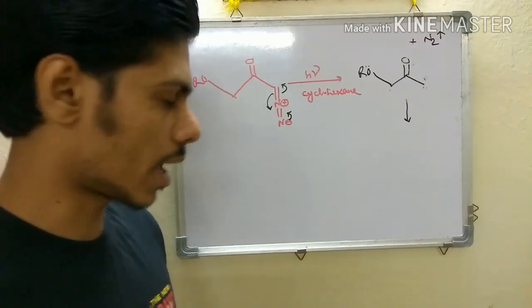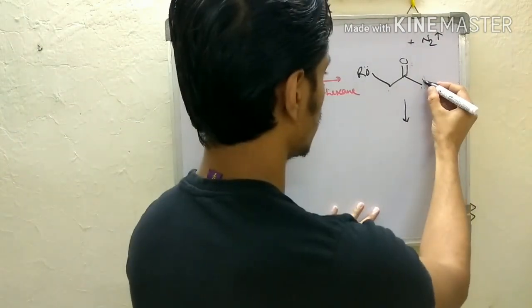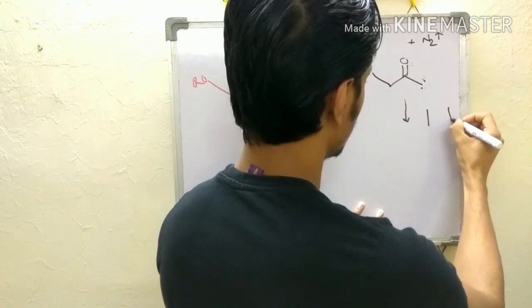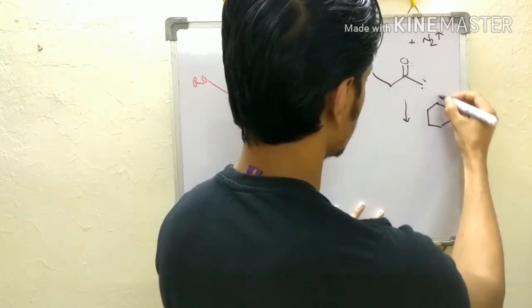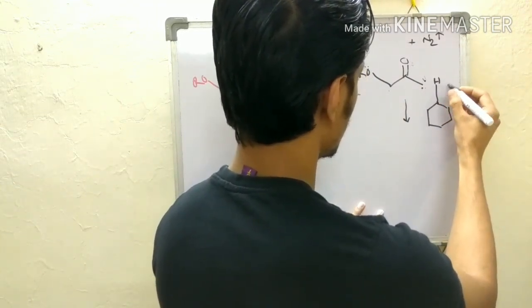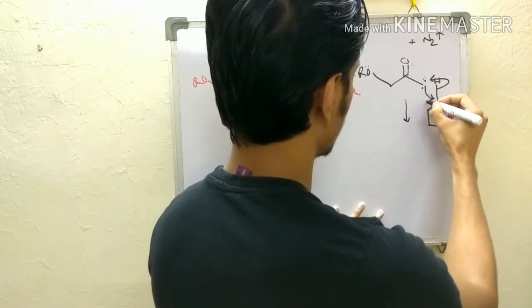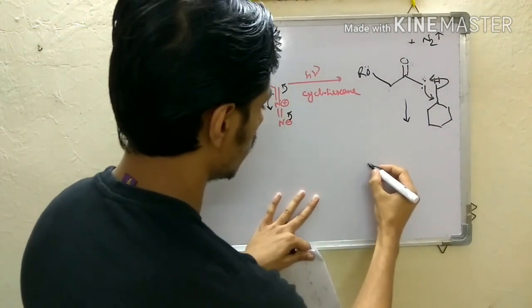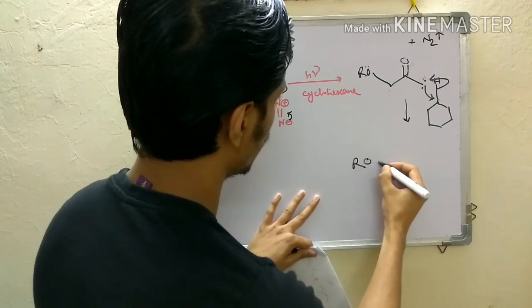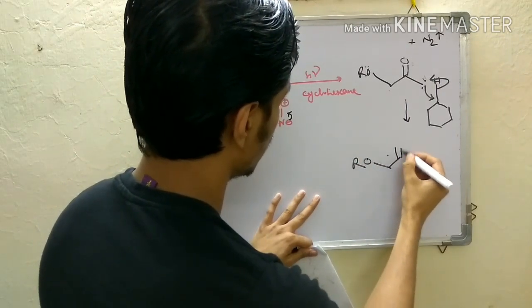This will not happen. Instead what can happen is that the cyclohexane is solvent here and if you draw cyclohexane like this, it can undergo the insertion reaction here.